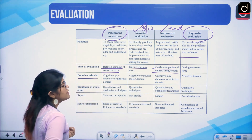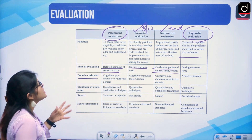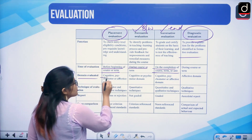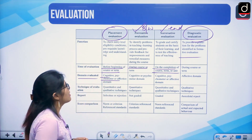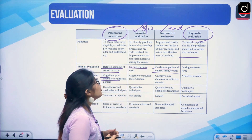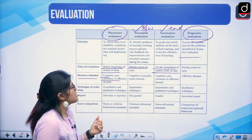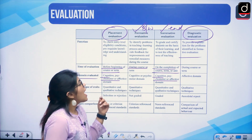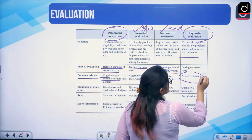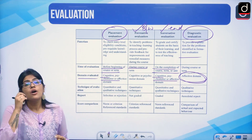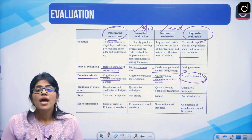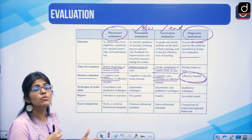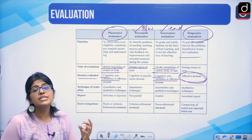Then comes the domain that each type targets. In placement evaluation, they look at your aptitude — psychomotor, affective, or cognitive domains are the targets. For formative evaluation, psychomotor and cognitive domains are the target. For summative, cognitive and psychomotor or affective are the targets. In diagnostic evaluation, only the affective domain is the target because here the teacher is trying to help and guide you, discussing things with parents and giving constructive feedback.